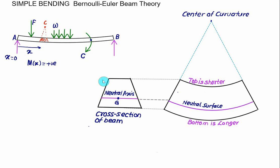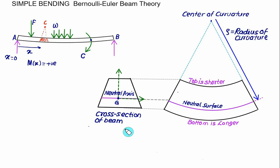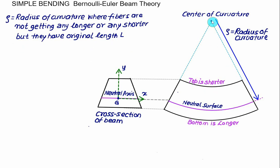We introduce the variable called radius of curvature, measured from the center of curvature to the neutral surface, represented by the symbol rho. In the cross-section, the axis system is set at the centroid, with horizontal axis X and vertical axis Y — positive upward, negative downward. The radial distance of the neutral surface from the center of curvature is rho, where fibers neither get longer nor shorter but retain original length L.